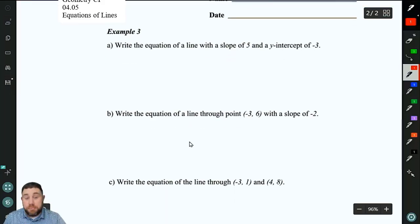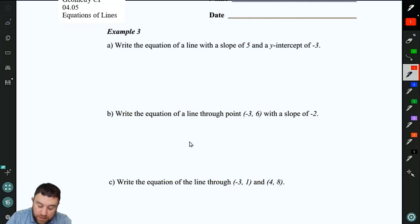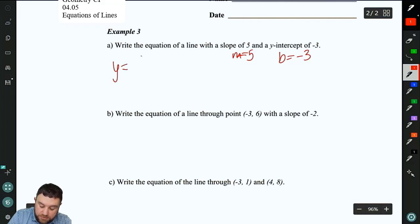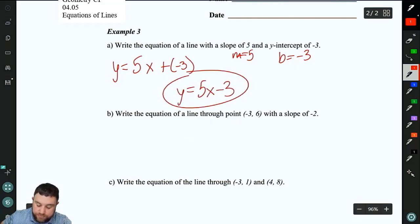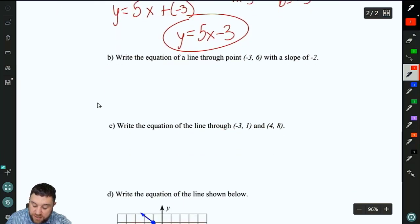All right, a little bit more algebra practice with this. It's been a while since you've done some of these types of problems. Write an equation of the line with slope 5. So m equals 5 and y-intercept of negative 3. So b equals negative 3. So y equals 5x plus negative 3. We don't want to say plus negative 3. We'll simplify that to 5x minus 3. If you want to go straight to that point, that's fine. You don't need to write the plus a negative statement in there.